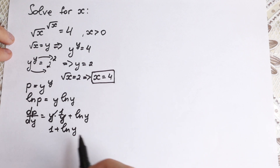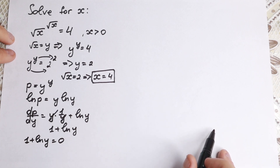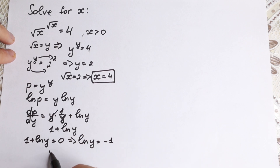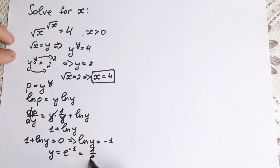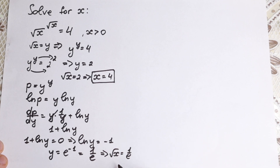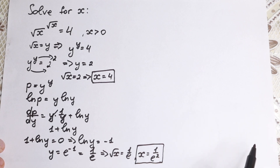We have 1 plus natural log y equals 0. From here, natural log y equals minus 1, so y equals e to the power minus 1, which equals 1 over e. This point is in terms of y, so we write the equation: square root of x equals 1 over e. Squaring both sides, x equals 1 over e squared. This is our critical point.